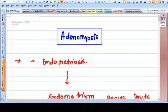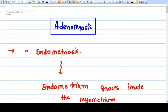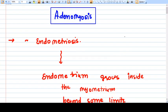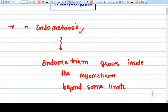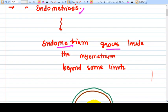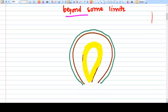Hello friends, in this video we will discuss adenomyosis. Adenomyosis is basically a type of endometriosis, which means the endometrium outside the uterine lining grows inside the myometrium beyond some limits. This is why adenomyosis happens.